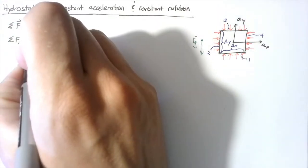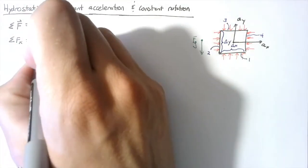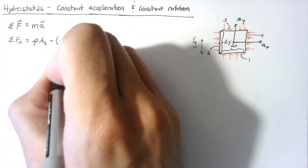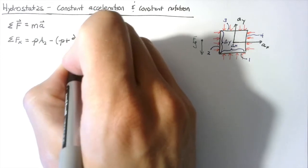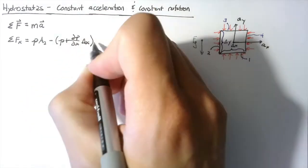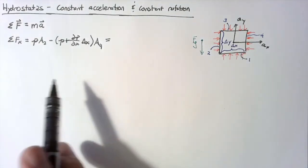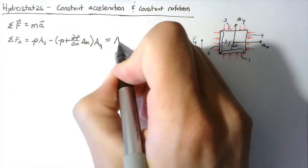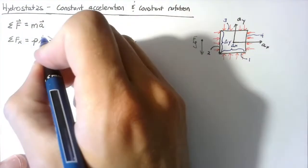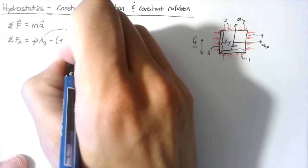The x direction is going to have the same forces as before — the pressure on the left-hand side multiplied by the area of face two, minus the pressure on the right-hand side, which is increased by dp/dx times delta x. That's all going to be multiplied by the area of face four. All of this together is going to be equal to our mass, delta m, multiplied by the acceleration in the x direction. These areas a2 and a4 are both equal to delta y delta z.